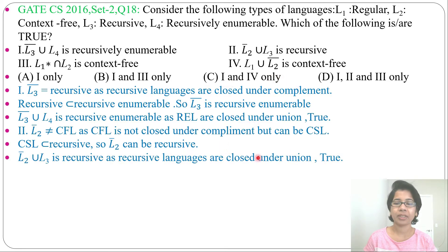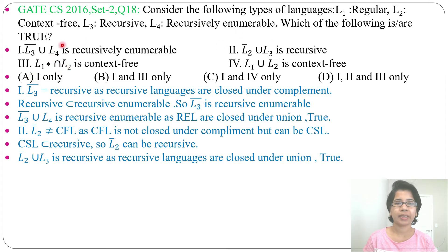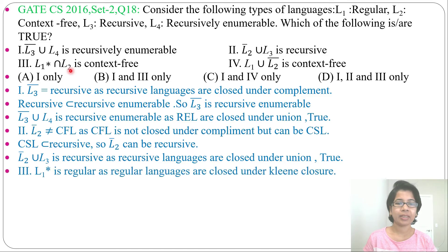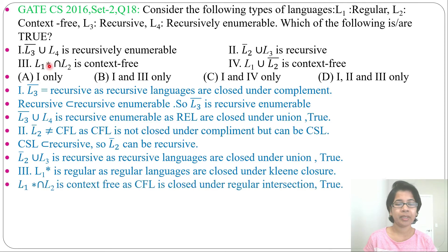Third statement: L1 Kleene closure intersection L2. What is L1? L1 is regular, and regular language is closed under Kleene closure, so L1 Kleene closure is regular. What is L2? L2 is context-free. Regular language intersection with context-free language is context-free, because all languages are closed under regular intersection. Context-free intersection regular is context-free. So this is true.